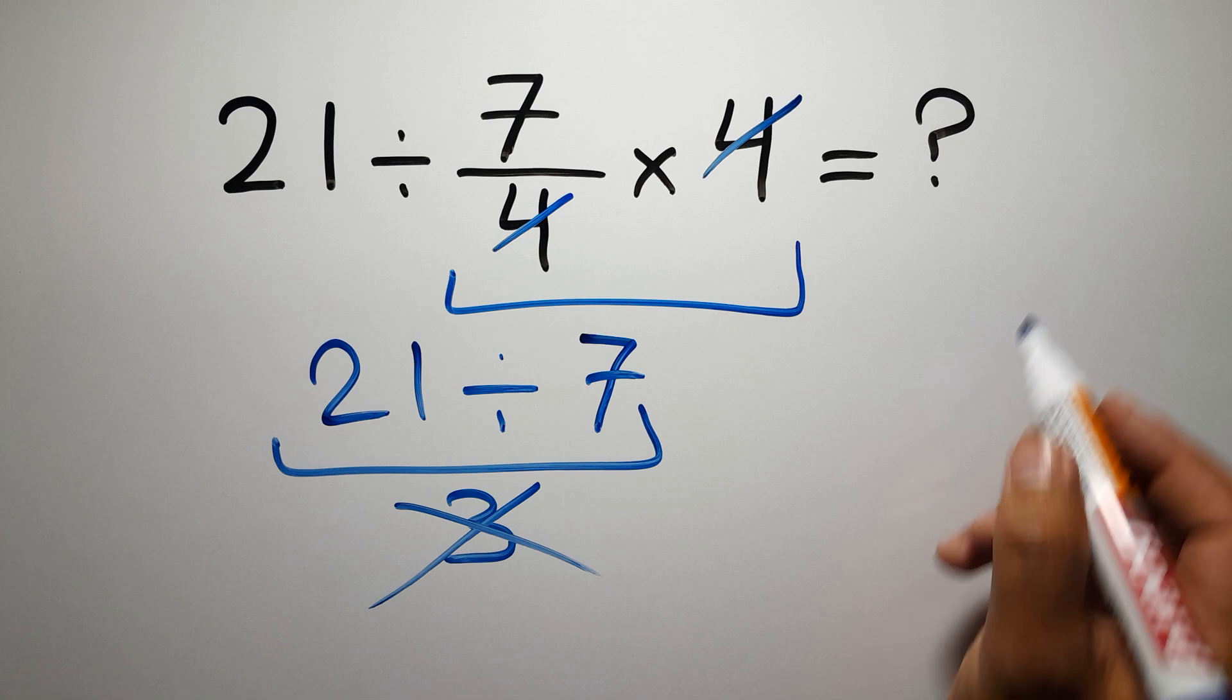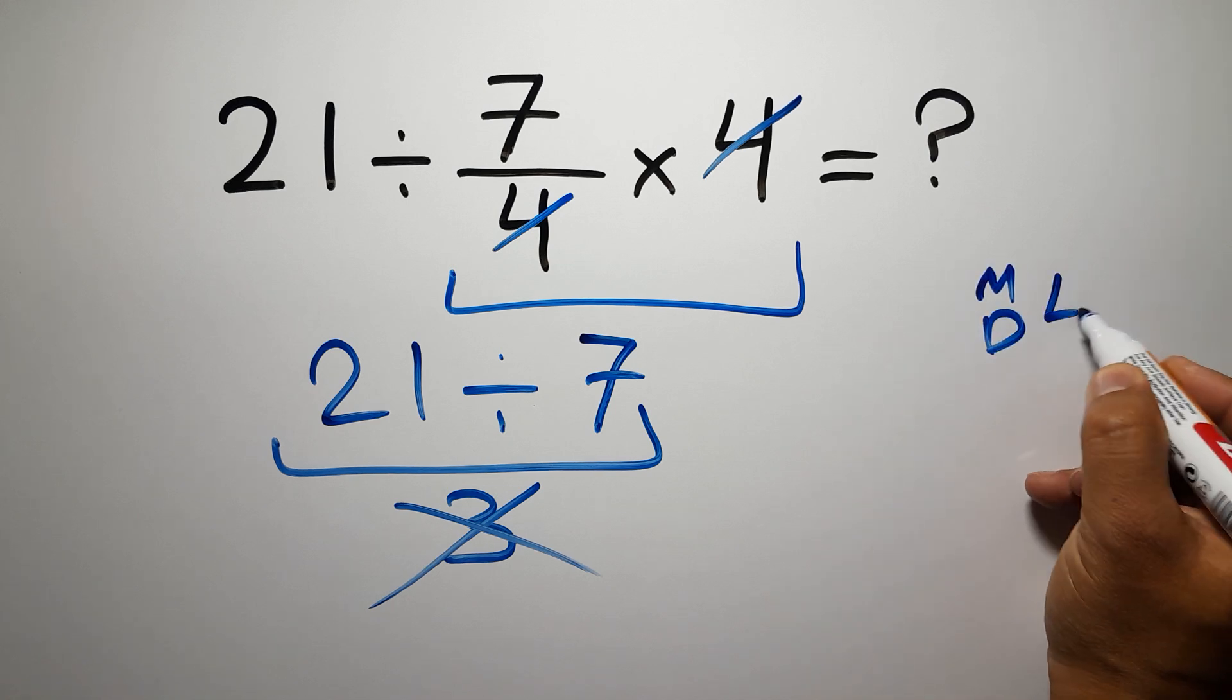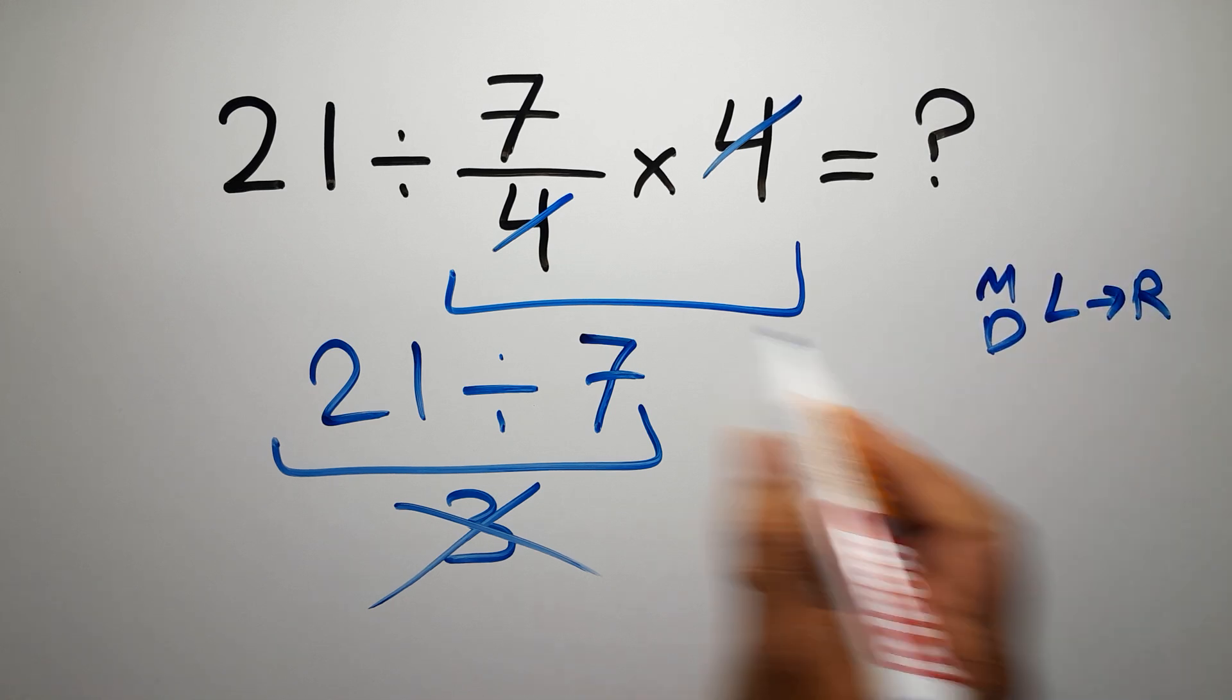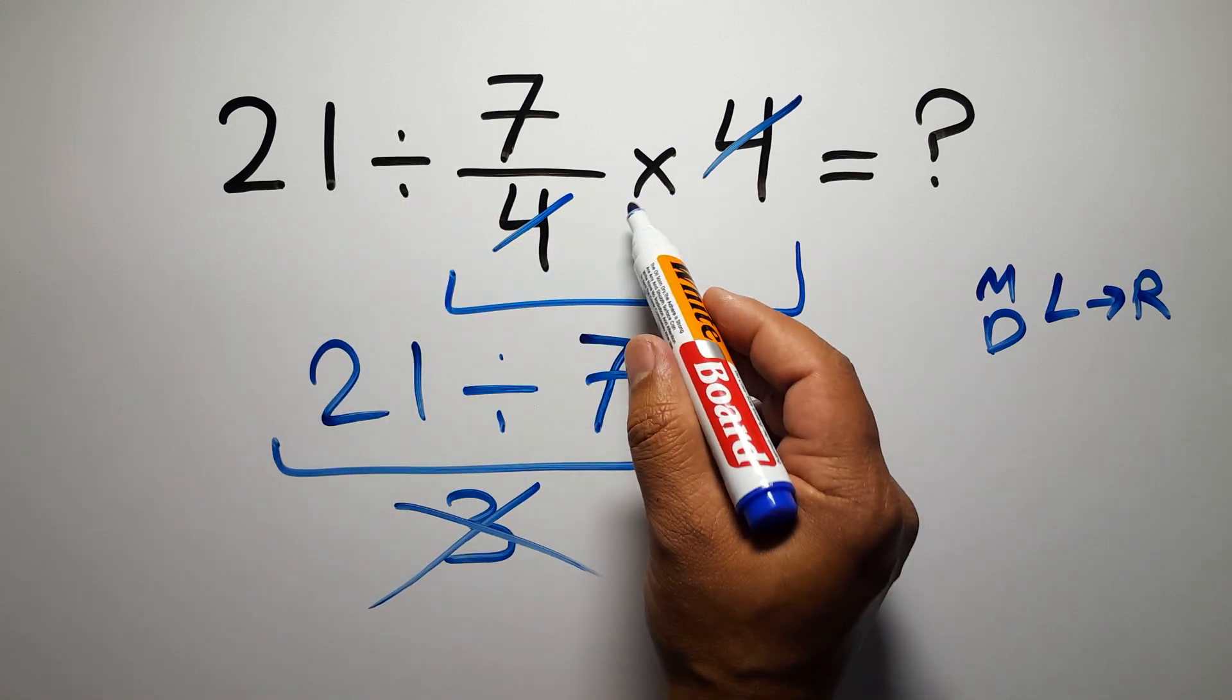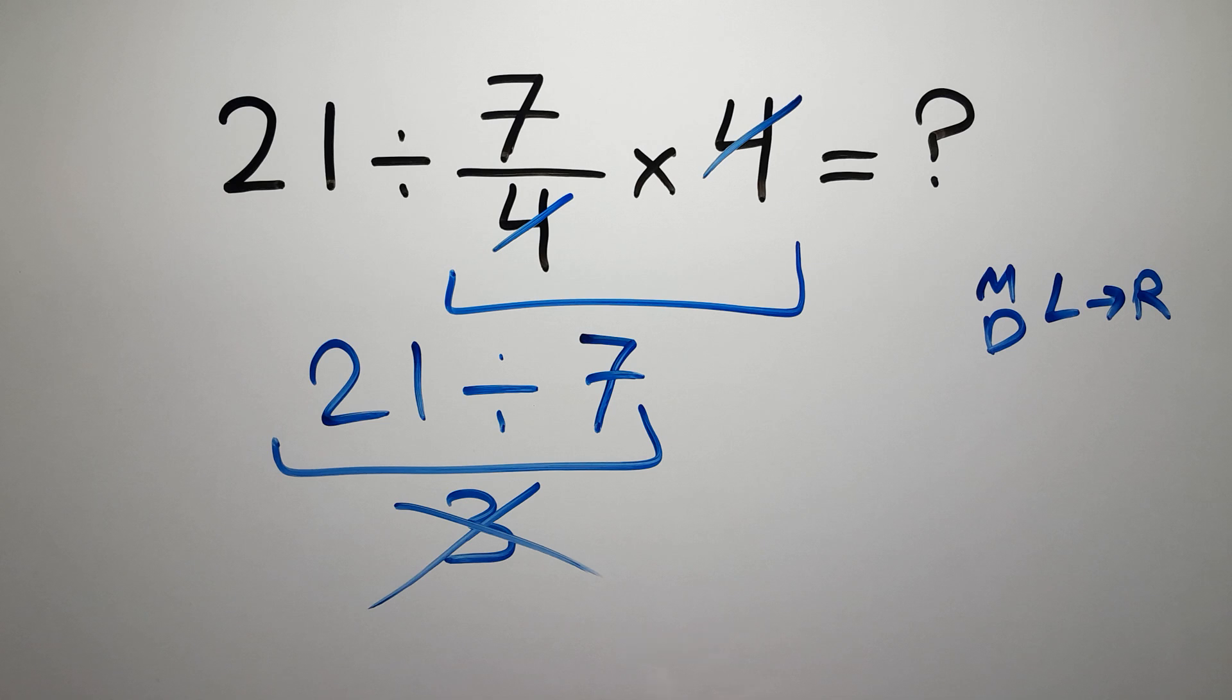Multiplication and division have equal priority and we have to work from left to right. So here first we have to do this division, not this multiplication. If you do this multiplication before this division, it is wrong.